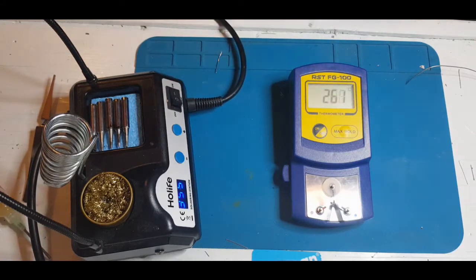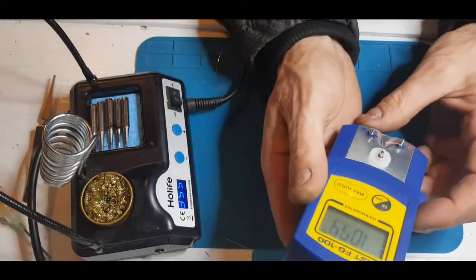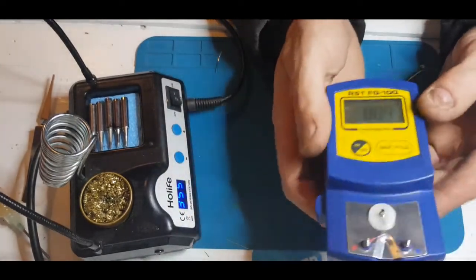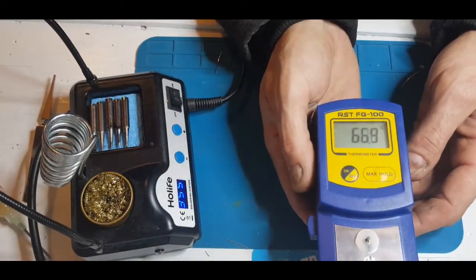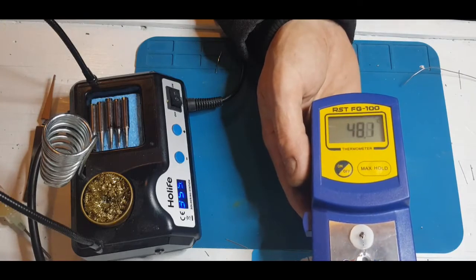So that's the ripoff HAKKO. Well, this one's branded RST, the FG100. Costs 10, 12 quid on Amazon. I can't see it really needing using that often. But it's another tool in the drawer. So for the cost of 10, 12 quid, who's grumbling?